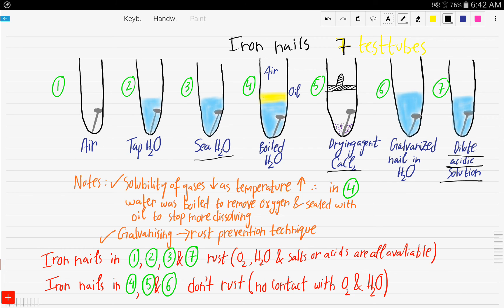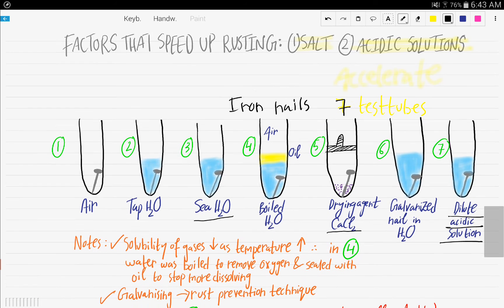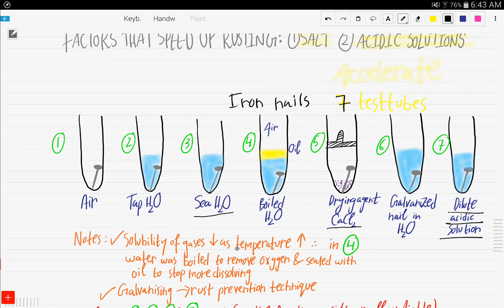Quick notes before we determine which nails are going to rust and which will not. The solubility of gases decreases as the temperature increases. Therefore, in number four, the water was boiled to remove the oxygen, and then it was sealed with an oil layer to prevent further oxygen from dissolving in the water. So this has no oxygen, only water. And galvanizing is a technique, is a rust prevention technique that we will be talking about in the next video. But for now, you just need to know that it is a rust prevention technique.